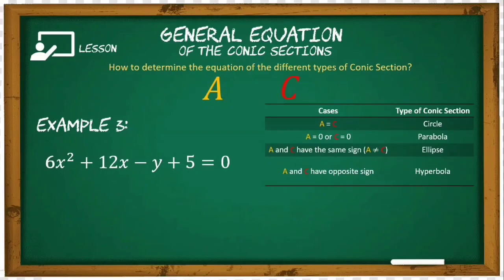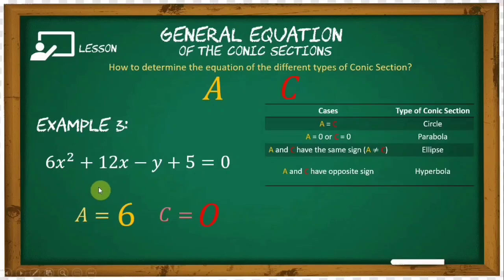For the third example: 6x² + 12x − y + 5 = 0. There is a missing term — the cy² term is absent. Since the y² term is missing, its value is 0. So a = 6 and c = 0. Therefore, since c is equal to 0, this equation represents a parabola.